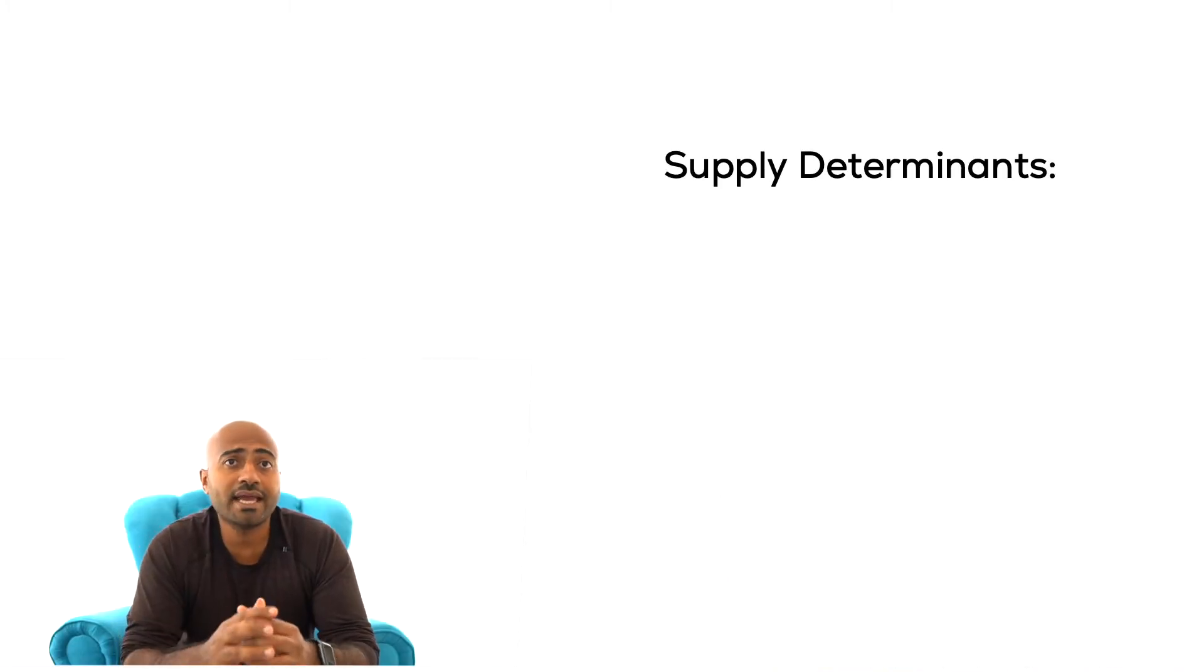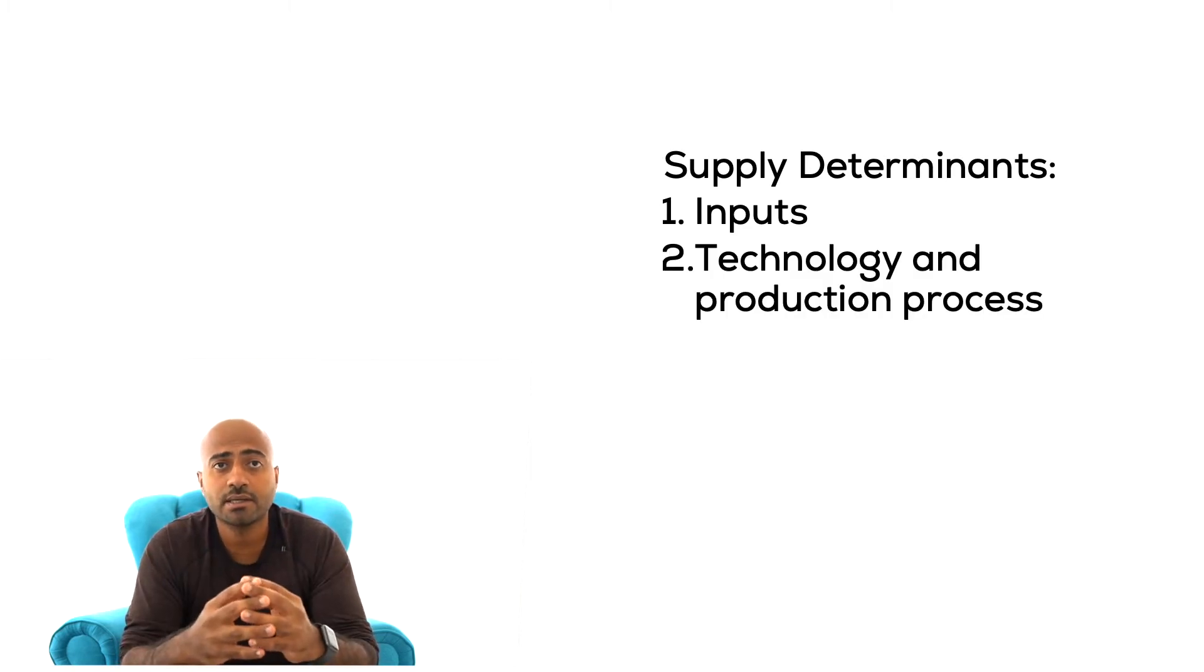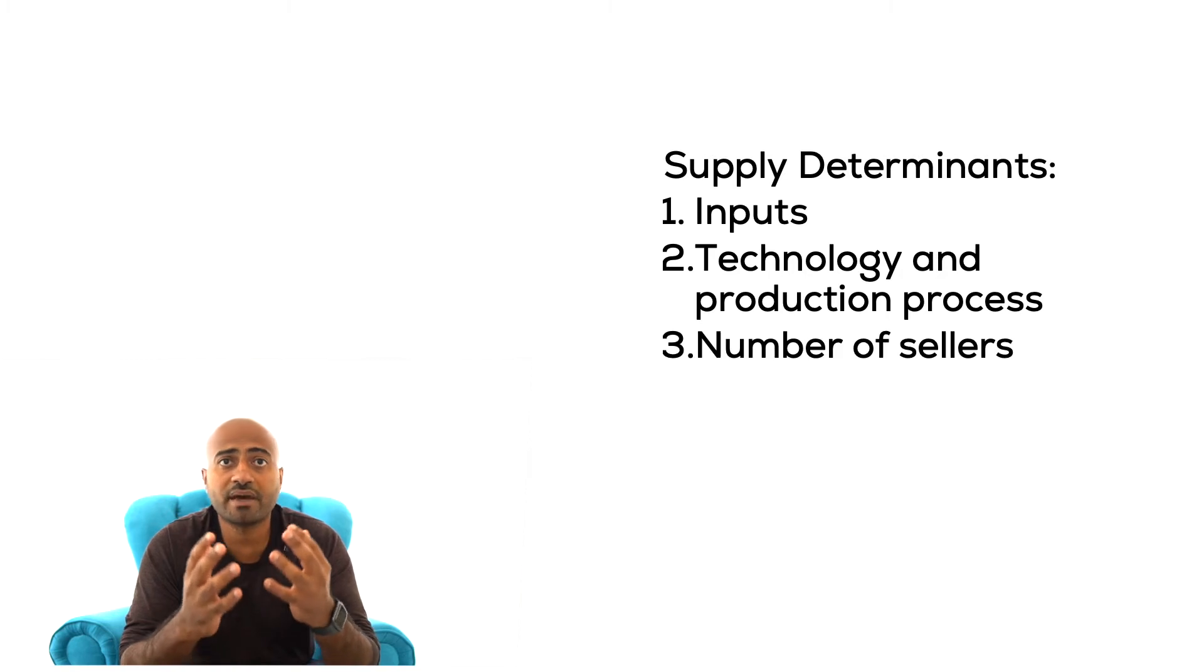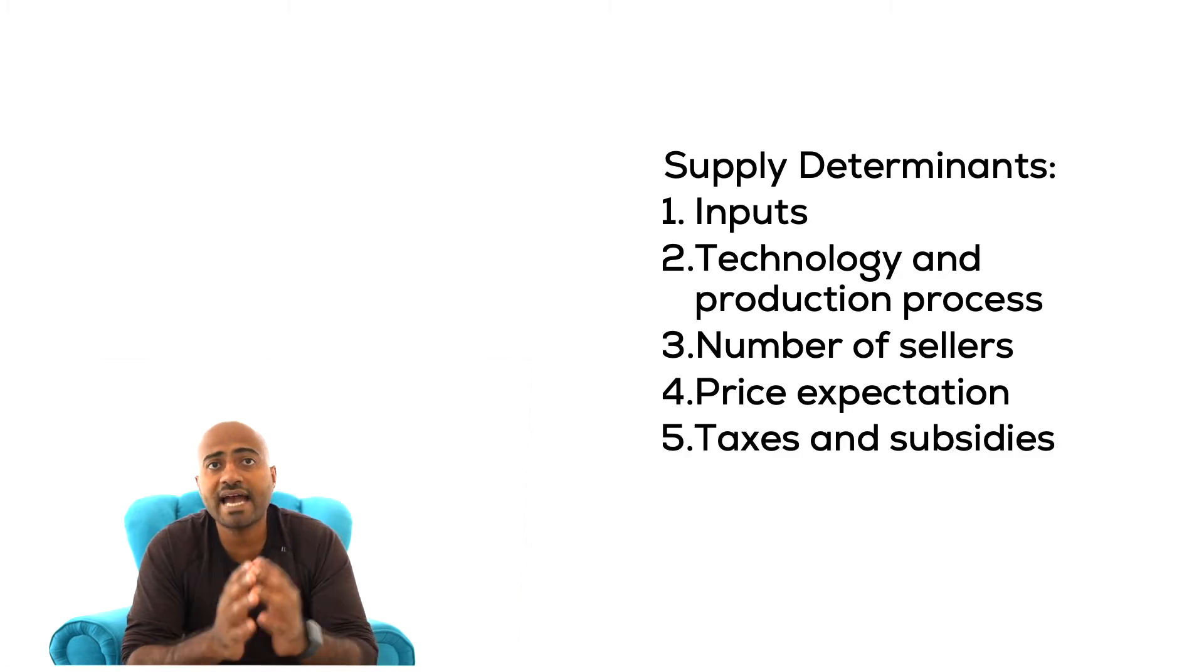Suppliers on the other hand are influenced by the cost of their input and technology and production process. They are also influenced by the number of other sellers in the market, price expectation of future prices, and then taxes and subsidies. Competitive markets try to balance demand and supply. The changing environment can be balanced through prices.